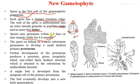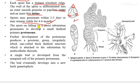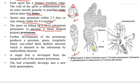The spores will germinate within two to three days, or they may remain viable for about four to six months. As soon as the spore falls on a moist substratum, it germinates to develop a small thaloid primary protonema. In figure (b), the spore germinates, and in figure (c), the germinating spore develops into a structure known as the primary protonema.